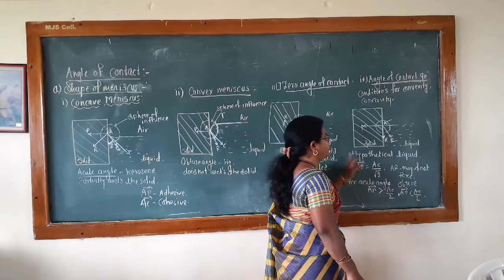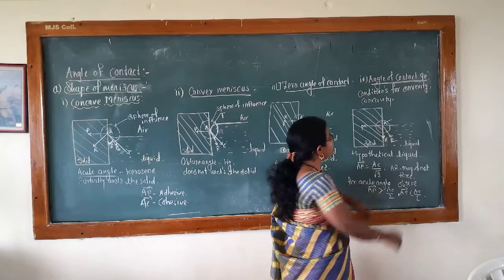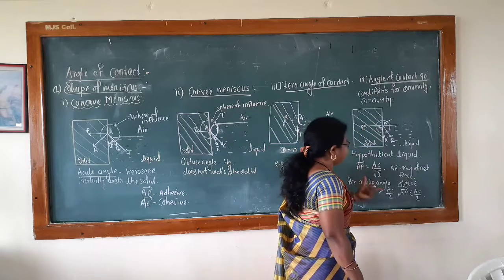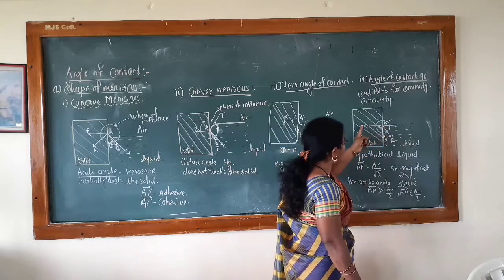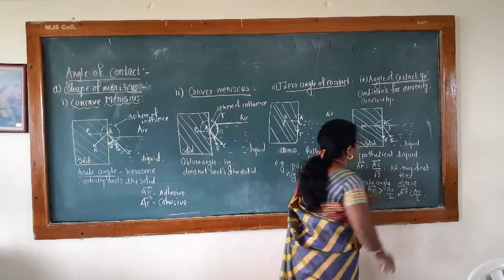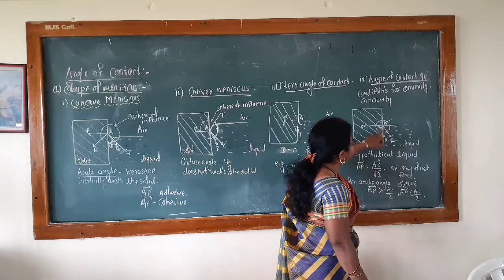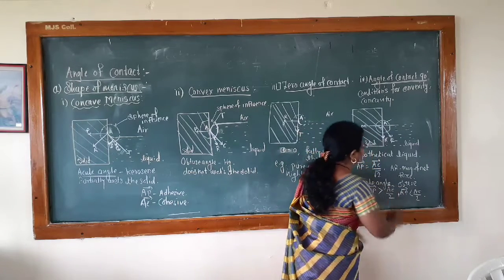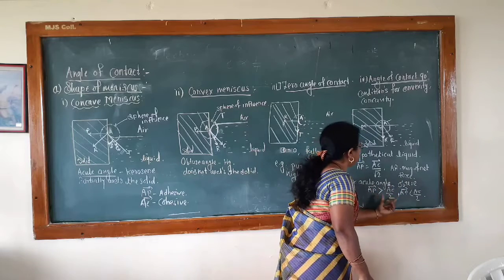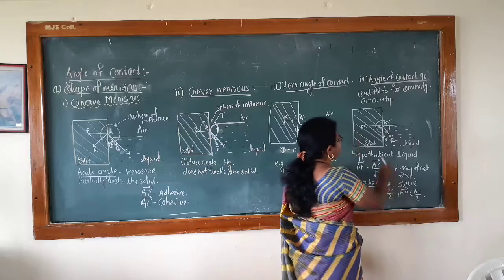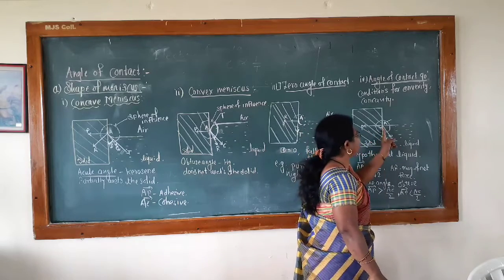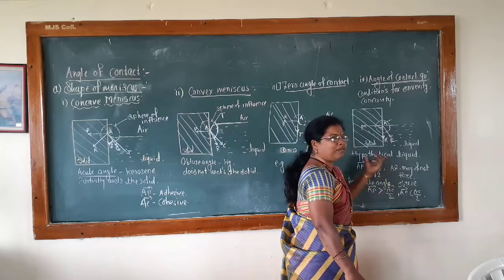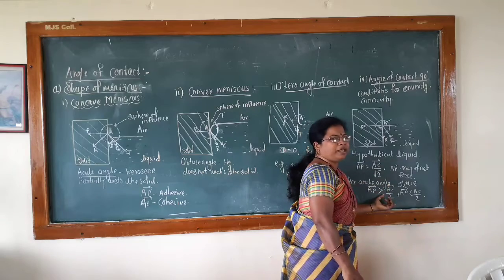One more thing: if there is a hypothetical liquid — that means an imaginary liquid — which makes an angle equal to 90 degrees, then the condition is that AP bar (the adhesive force) should be equal to AC bar divided by the square root of 2, where AR bar is the magnitude of the net force. For an acute angle, AP bar is greater than AC bar divided by the square root of 2. This condition is derived by using the parallelogram law and cos theta to find the resultant.